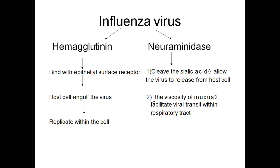Hemagglutinin binds with the epithelial surface receptor and the plasma membrane receptor of the host cell. The host cell then engulfs the virus by phagocytosis — the cell receptor and virus spike interact; a vacuole invades the cytoplasm and the virus replicates within the cell. Neuraminidase cleaves sialic acid, allowing the virus to release from the host cell — the enveloping form releases and the capsomere DNA-protein form invades the host cell.